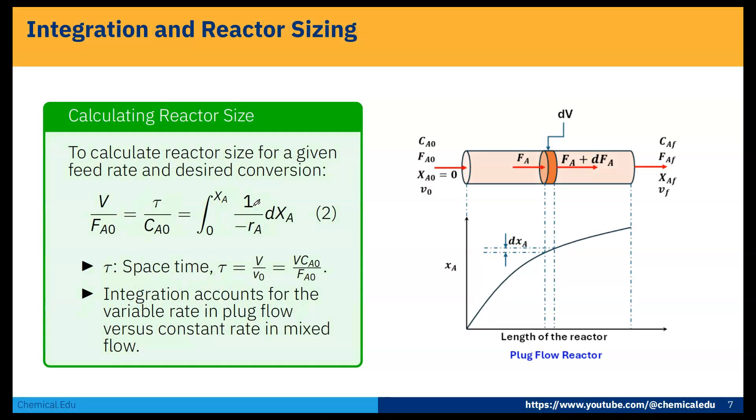Now we got this equation. If we do that integration: V by FA0 is equal to tau by CA0, that is equal to zero to XA, one by minus rA dXA. Here tau is the space time, so tau is nothing but V by V0, which is equal to V times CA0 by FA0. Integration accounts for the variable rate in plug flow versus constant rate in mixed flow. So this is the design equation for PFR. That's it, thank you.